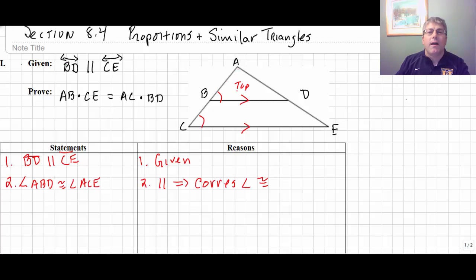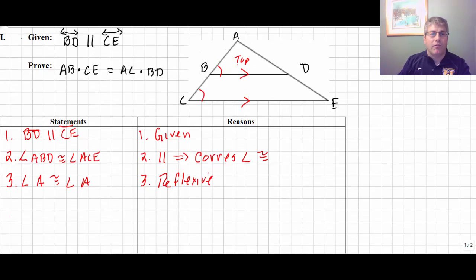So we can prove angle ABD is congruent to angle ACE, because those parallel lines imply the corresponding angles congruent. Now, both of the triangles include angle A, so we could use angle A as congruent to angle A by reflexive, or we could also prove the other side corresponding angles congruent as well.